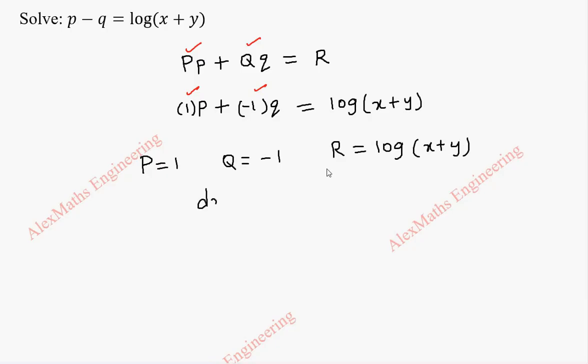Now to get a solution we have to solve dx by P equal to dy by capital Q equal to dz by R. We are going to substitute the values of P, Q and R.